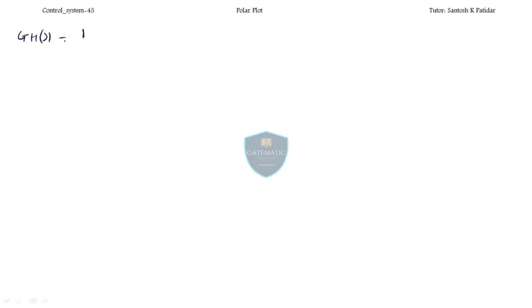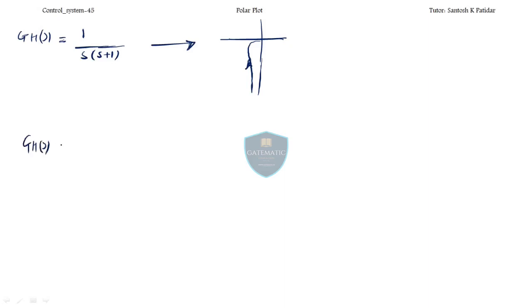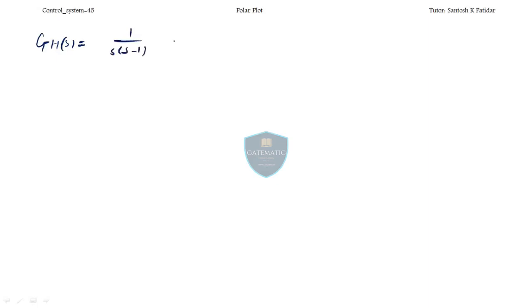So based on this, now I'll add zeros or poles that are in the RHS. If you remember, we had taken this transfer function before, and for this when we drew the polar plot we got it looking like this. But what if instead of a finite zero, you are adding a finite pole — specifically s minus 1? Let us start the journey: 1 divided by s(s minus 1).